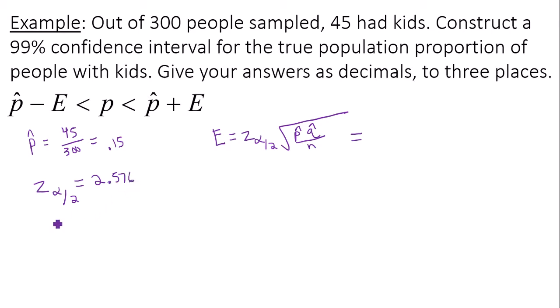Also in our error bound formula or margin of error formula, I need q hat. q hat is always 1 minus p hat, 1 minus 0.15. That would be 0.85. The sample size is going to be 300.